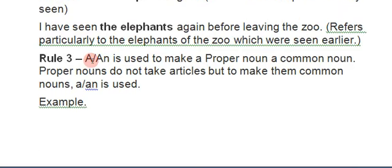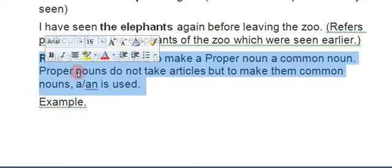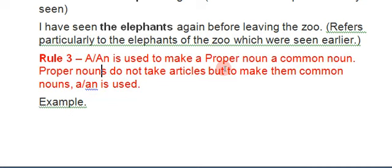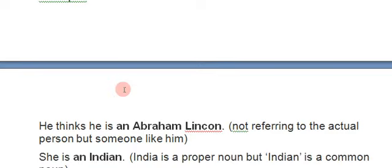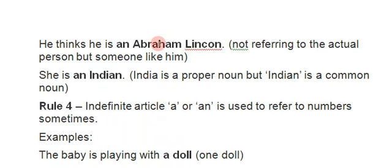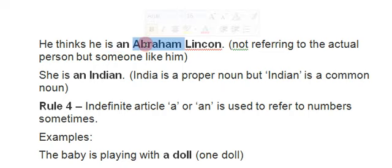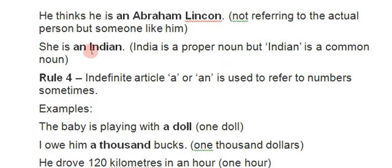Rule three: 'a' or 'an' is used to make a proper noun into a common noun. Proper nouns do not take articles normally, but to make them common nouns, we use 'a' or 'an'. For example: 'He thinks he is an Abraham Lincoln.' Also, 'He is an Indian' — India is a proper noun but 'Indian' is a common noun.